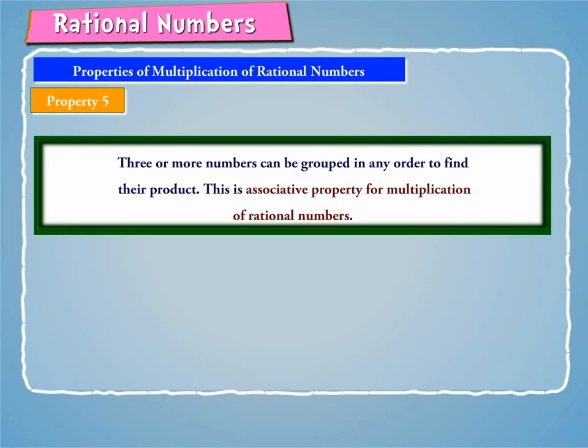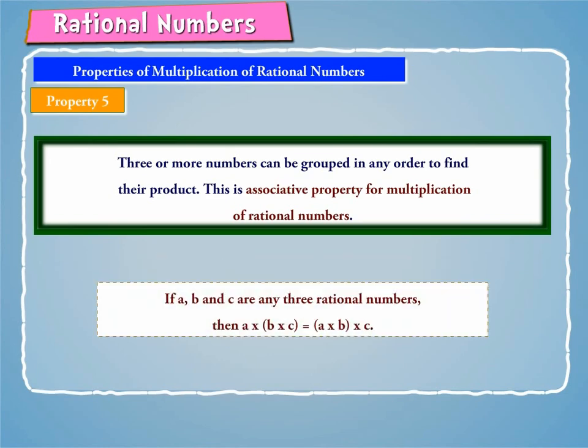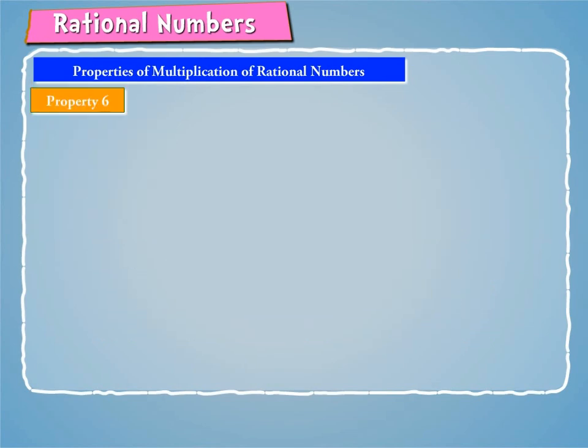Thus, if A, B and C are any three rational numbers, then A into (B into C) is equal to (A into B) into C.